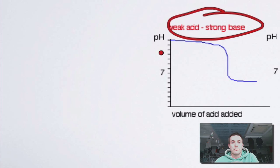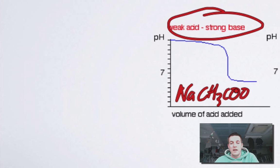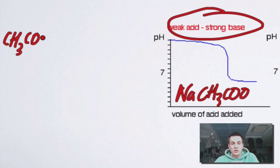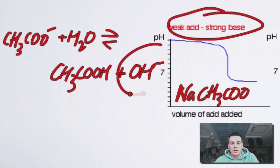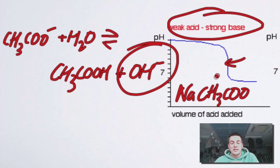For a weak acid/strong base combination — maybe sodium hydroxide and ethanoic acid — I would get sodium ethanoate at equivalence. In every case, I'm looking at what salt is present at equivalence and writing hydrolysis equations to demonstrate what the pH would be, so that I can justify my choice of indicator. The ethanoate ion is the conjugate base of a weak acid and will react with water to form ethanoic acid and hydroxide ions. These hydroxide ions make the solution alkaline, which explains why the pH at equivalence is greater than 7 — and why you want an indicator that changes colour in the basic range, such as phenolphthalein.